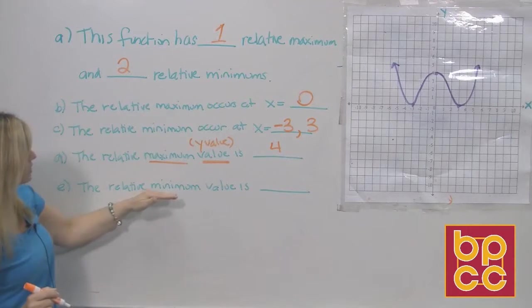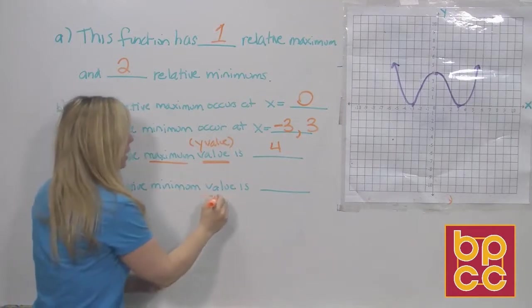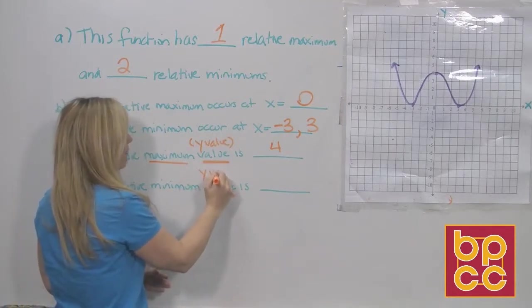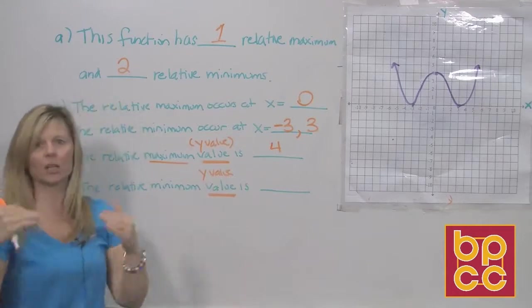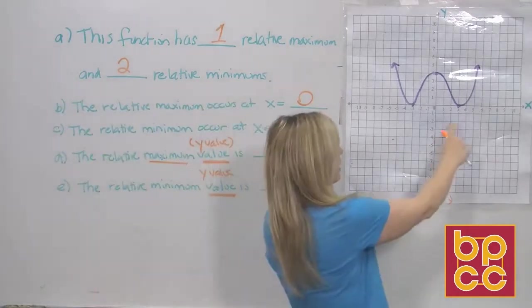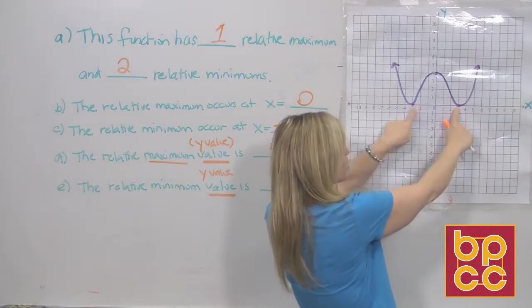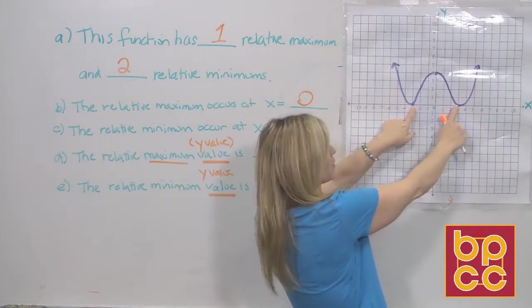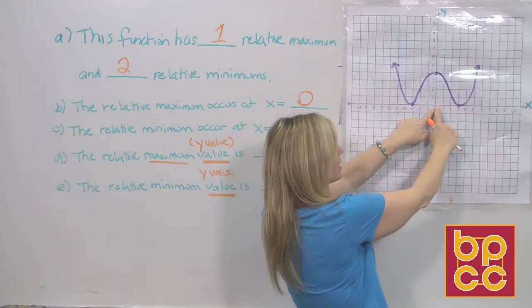When it says the relative minimum value, again, value means y value. What is the lowest y value of the points? And if you look, it doesn't matter if you pick this relative minimum or this relative minimum. Both of these minimums have a y value of zero.